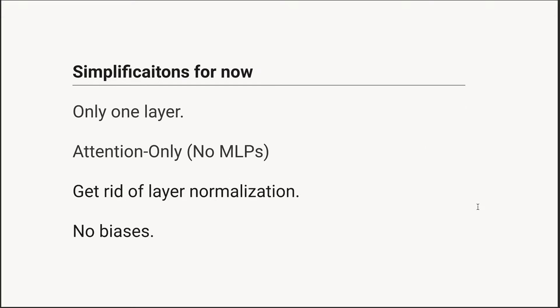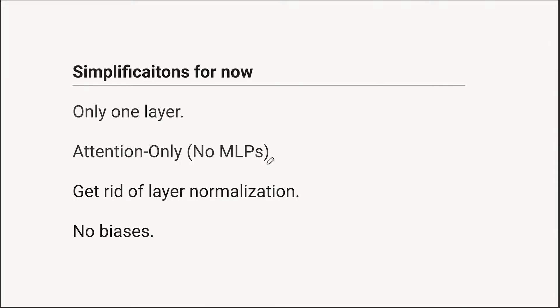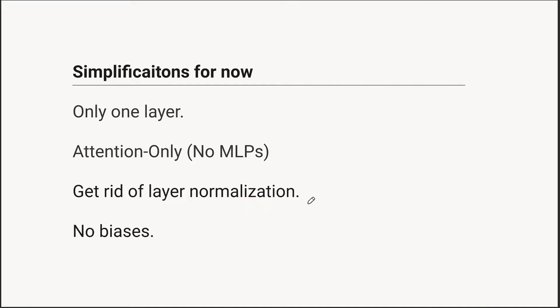We're studying a simplified model. The one-layer attention-only transformer is a one-layer model, and it's attention-only, which means it has no MLPs. There are two other smaller simplifications: we're going to get rid of layer normalization, because we think it probably isn't a critical part of the story but would add a lot of bookkeeping. Similarly, we're going to ignore or get rid of the biases, because again those would add a lot of complexity.